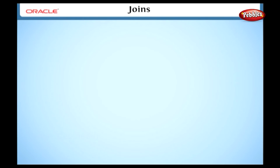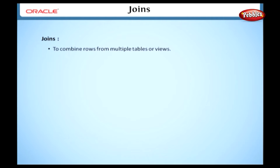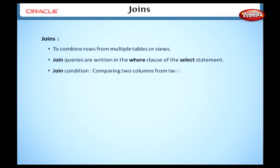In this lesson, we are going to study about joins in a database. In order to combine rows from multiple tables or views, we use joins in our statement. In this session, we'll be briefly discussing joins and their types. In Oracle, join queries are written in the WHERE clause of the SELECT statement. We can specify the join condition by comparing two columns from two tables. Oracle joins the tables according to the join condition.